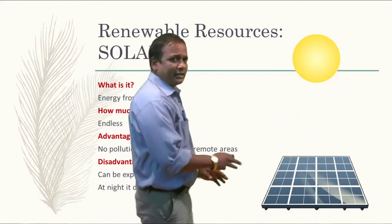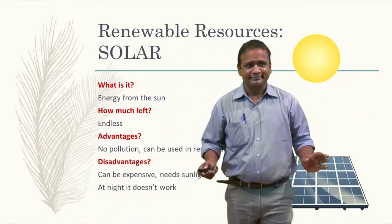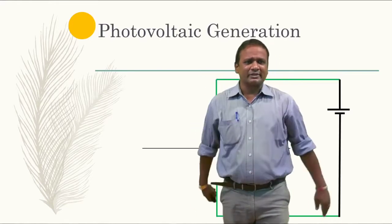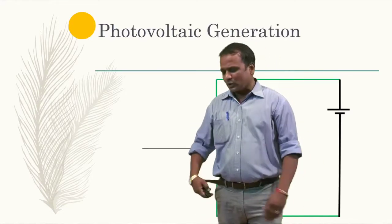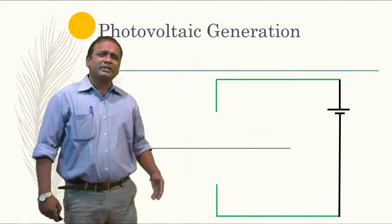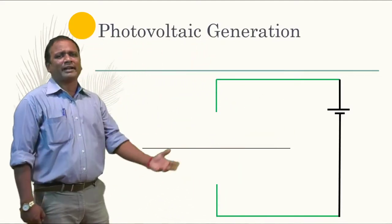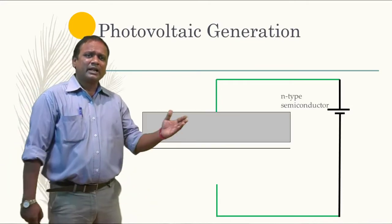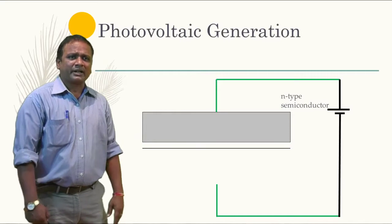Now let's understand how photovoltaics work. Photovoltaic is the one which converts solar energy into electrical energy. For photovoltaic generation, this is a small schematic of how to represent this. One layer would have an N-type semiconductor.